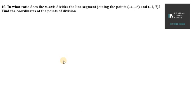Hello everyone, let's start with question number 10 of exercise 7.3. So it says, in what ratio does the x-axis divide the line segment joining the points minus 4, minus 6 and minus 1, comma 7?